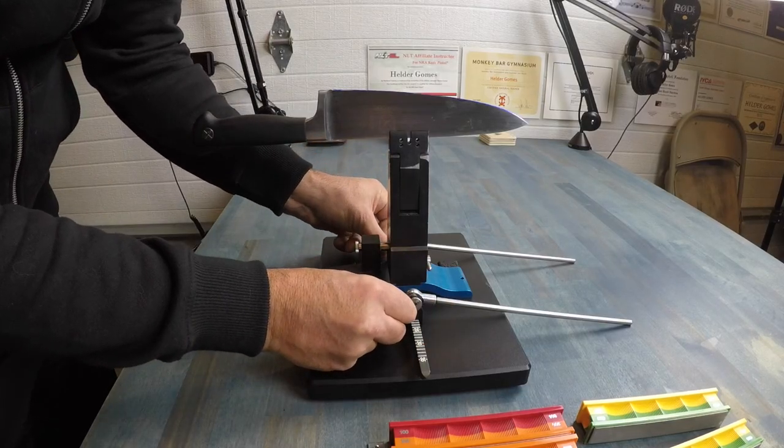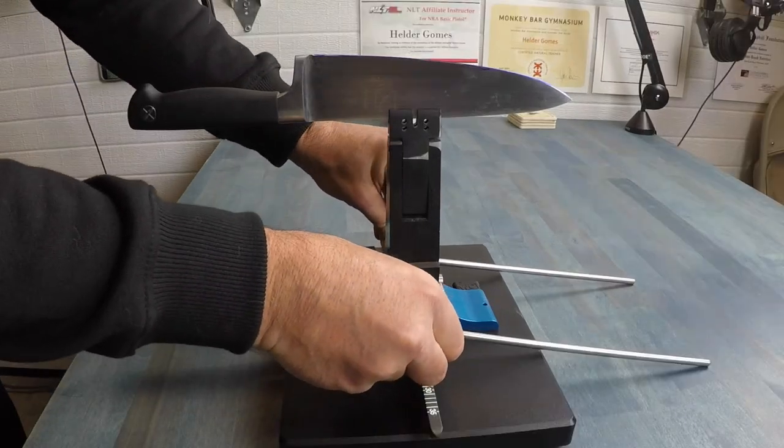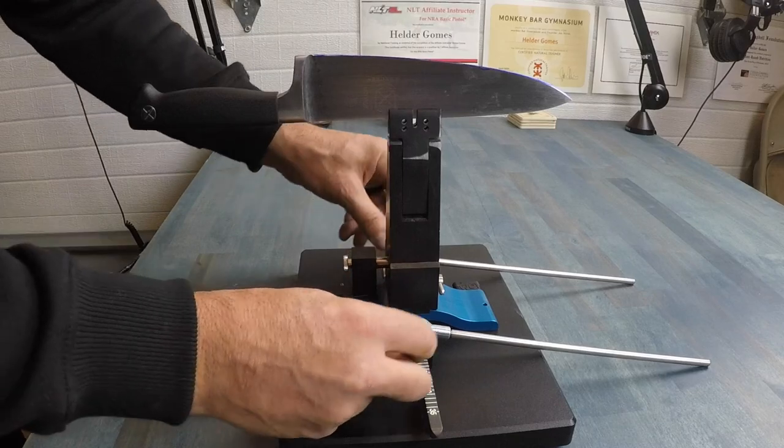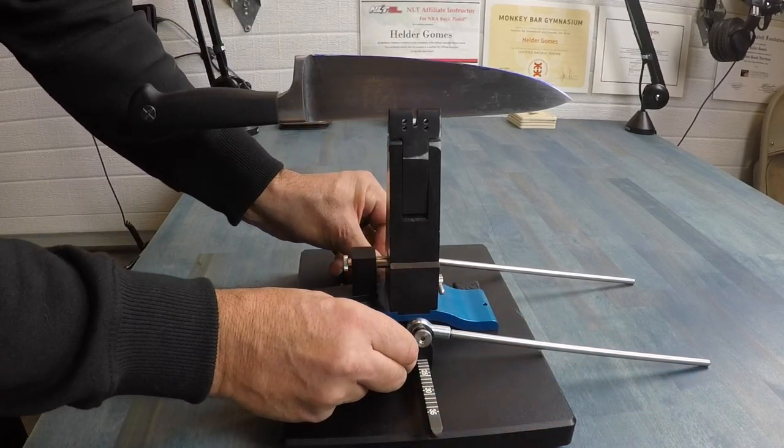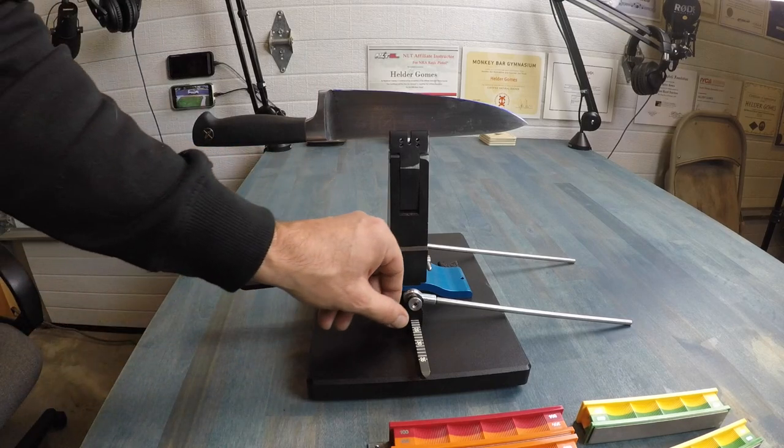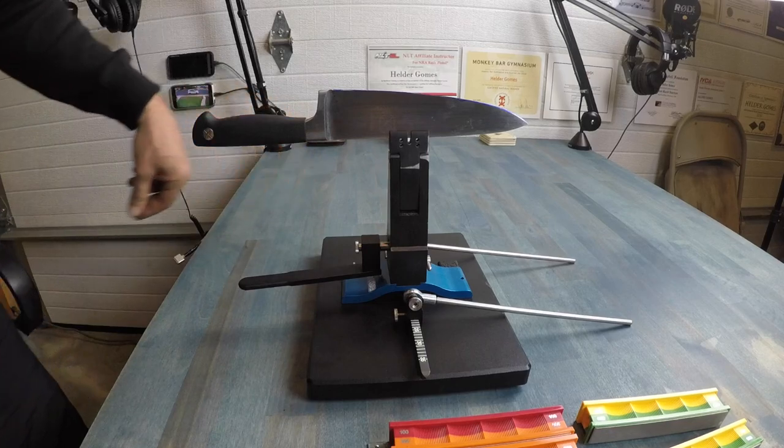After getting everything tightened down, and remember always check these things, they do have a tendency to loosen up especially in the beginning before everything's broken in. So every once in a while especially when you are changing out your sanding blocks just go ahead, keep it a little touch here, make sure everything's snug and good to go before you get started.